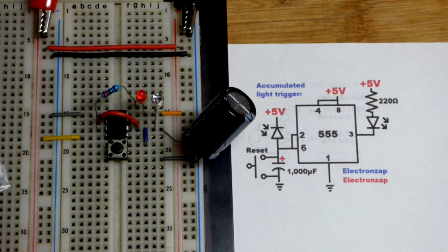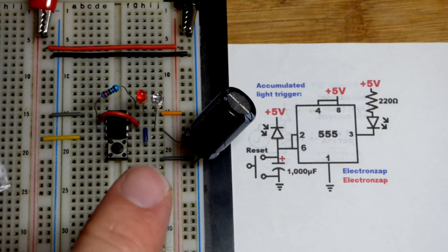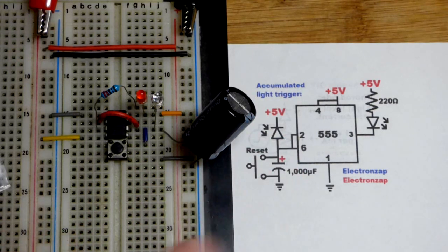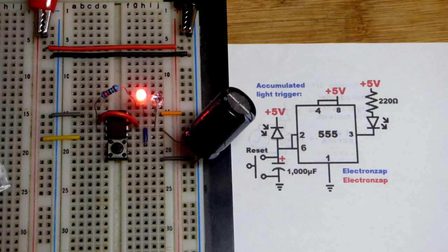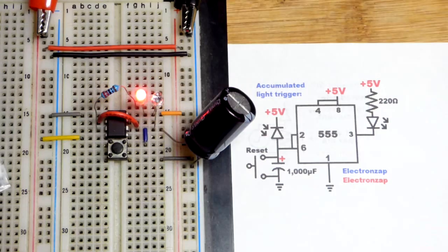The time that it takes to turn on actually depends on how much light falls on that photodiode right there, which is reverse biased by the way. And there you can see that it took a while to turn on.